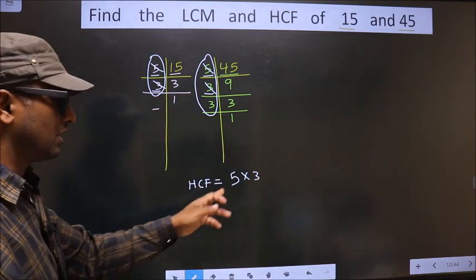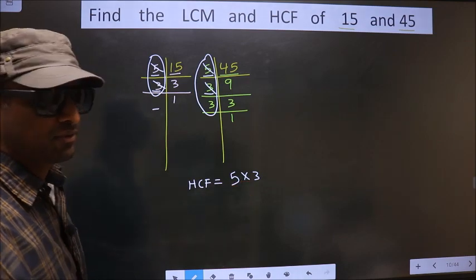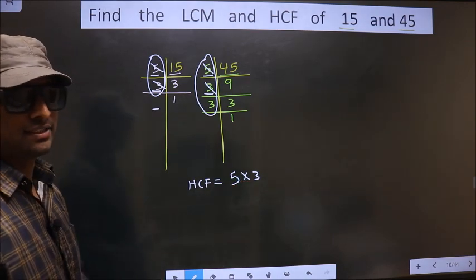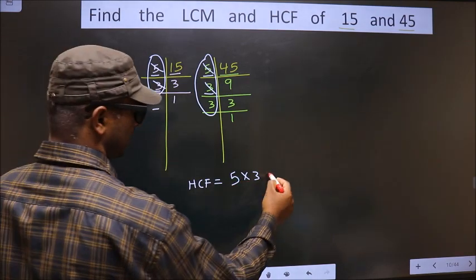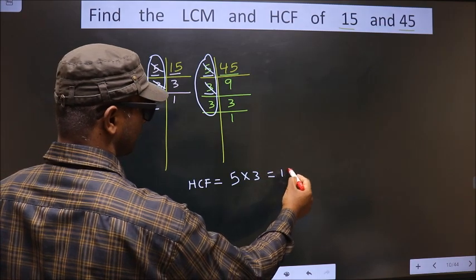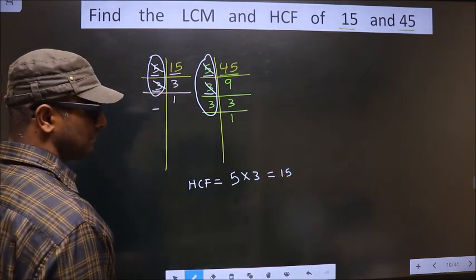Therefore, you multiply these numbers. Whatever number you get, that is your HCF. So that is 5 into 3, which equals 15. 15 is our HCF.